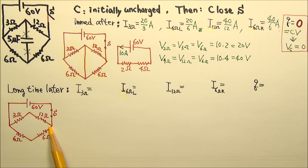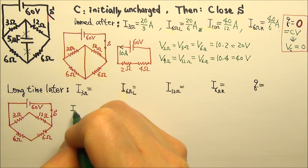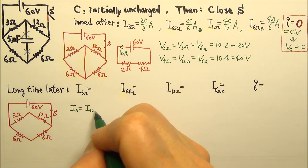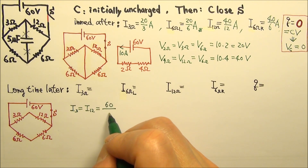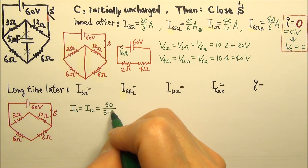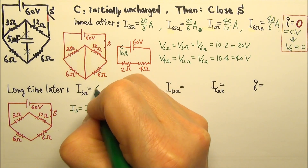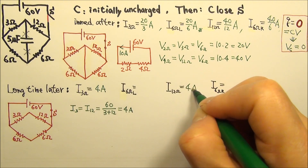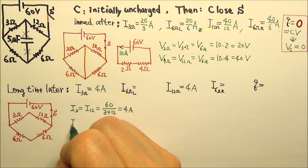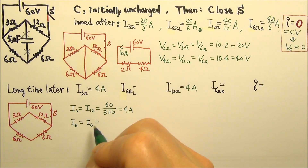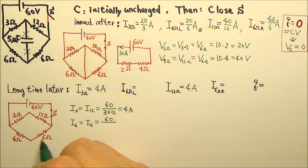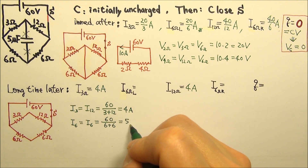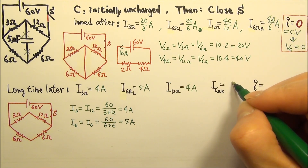These segments are in parallel with the 60-volt battery, so each segment gets 60 volts. The 3Ω and 12Ω get the same current because they are in series; with 60 volts across 3 plus 12 = 15Ω, the current is 4 amps. So the 3Ω gets 4 amps and the 12Ω also gets 4 amps. Similarly, the 6Ω and 6Ω are in series, getting 60 volts across 12Ω total, giving 5 amps each.